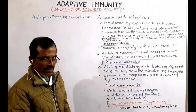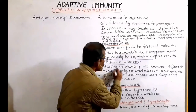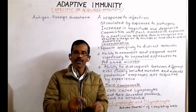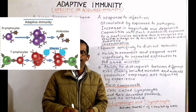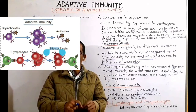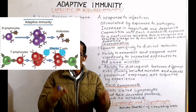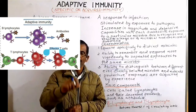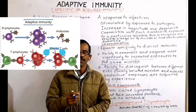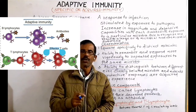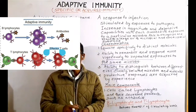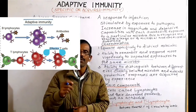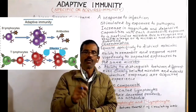The third characteristic is that adaptive immunity is able to distinguish between different, even closely related, microbes and molecules. The adaptive immune system can mount a specific immune response tailored to that particular pathogen only. The fourth characteristic is that the adaptive responses are acquired by experience, which is why adaptive immunity is also called acquired immunity.